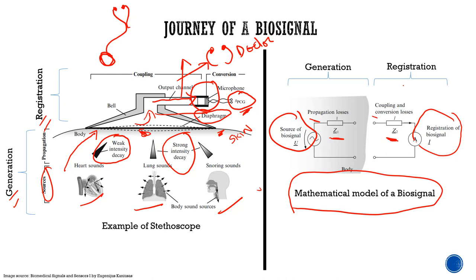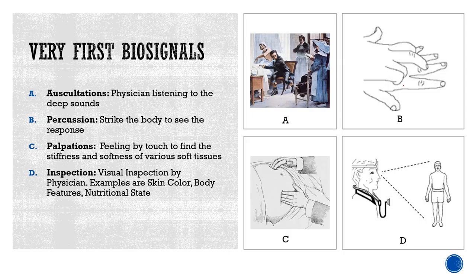Now let's look at the very first biosignals. They were recorded as early as 460 BC by Hippocrates. The first method — technique A — was the physician putting his ear directly on the lungs, listening to deep sounds and making a physical interpretation about the ailment the person might be facing. He was essentially a sensor trying to record various biosignals.